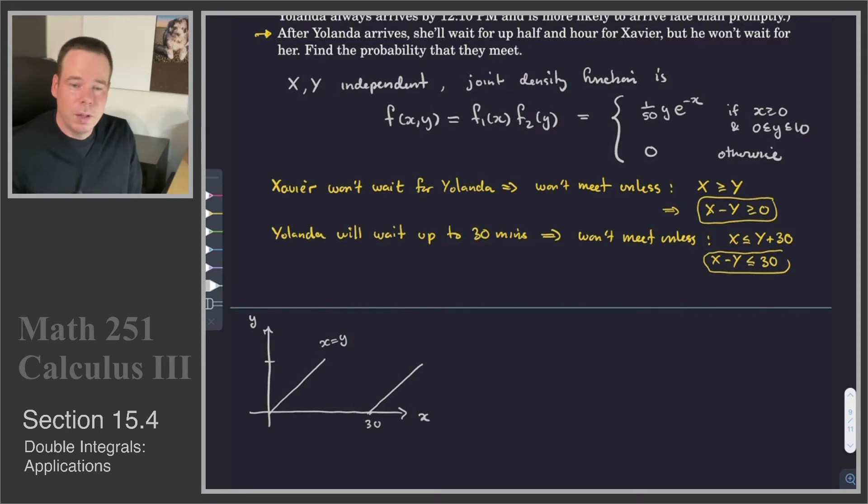The Y value, so there's our X and our Y. Y value, so Yolanda, we have that she won't arrive past 12:10. So Y has to be less than 10 for them to meet. And so there's the set of all pairs X and Y, the set of all values for our random variables which will allow them to meet each other.